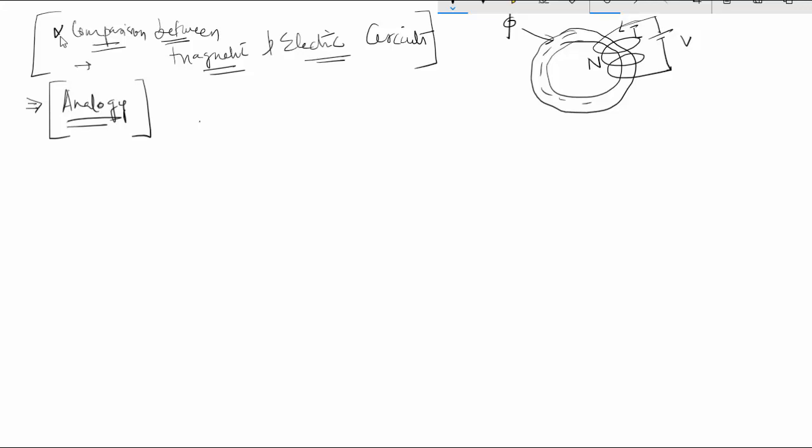And same way the electrical circuit can be shown like there is a resistance which is R and the voltage is V.